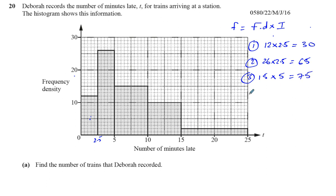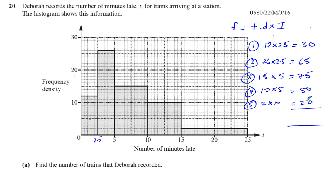The fourth bar has a width of 5 and a height of 10, so that's 10 times 5 which is 50. The final bar has a height of 2 and a width of 10, so 2 times 10 gives you 20. Adding all together: 30 plus 20 is 50, plus another 50 is 100, then 165, then 240. So there are 240 items represented in this histogram.